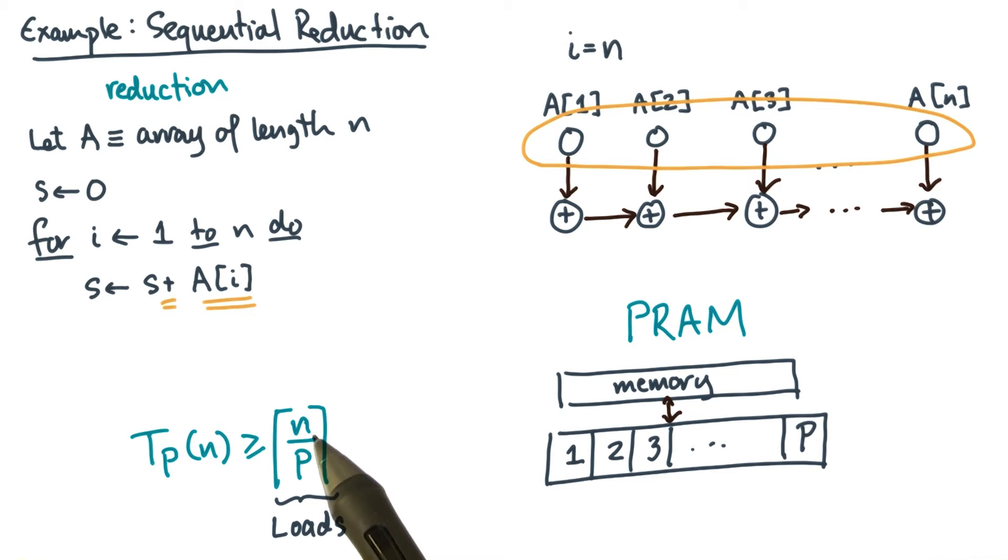That is, there are N loads which we divide among the P processors. Each load takes one unit of time, and since we're dealing with integers, we need this ceiling.